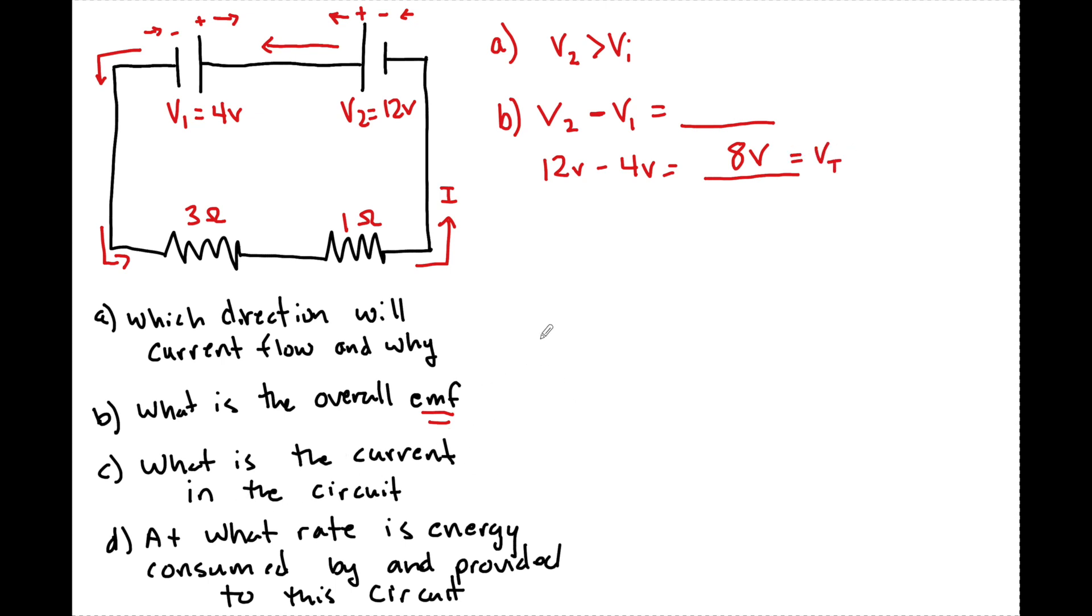So that would essentially be equal to the total. Now I want to know what's the current in the circuit. So they essentially want to know what is I total. And it doesn't really matter because we know in series that I1 equals I2. And this is a series circuit because current only has one loop.